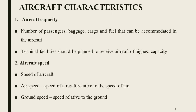Next, aircraft speed — the speed of the aircraft. There are two types: air speed and ground speed. Air speed is the speed of the aircraft relative to the speed of air, while ground speed is the speed relative to the ground.